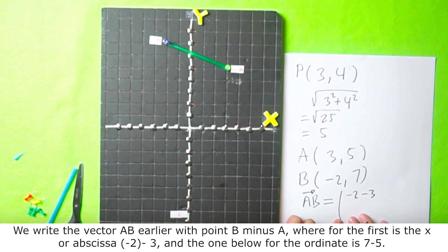We write the vector AB with point B minus A, where for the first is the x or abscissa, negative 2 minus 3, and the one below for the ordinate is 7 minus 5.